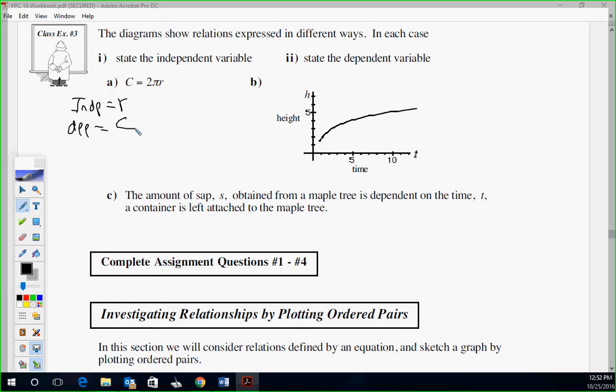How about on B? Noah, what's the independent on part B there? Yeah, T for time. Good. And then, Luke, how about the dependent? The height. Good. The amount of sap S obtained from maple trees is dependent on the time T a container is attached to the maple tree. So, amount of sap is dependent on the time. This case, independent is T, because time will determine how much sap. Dependent is the sap. That's just one in words.